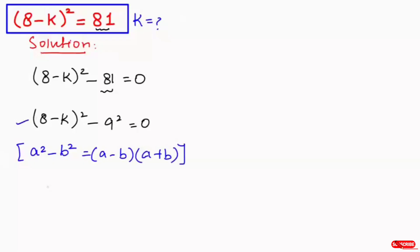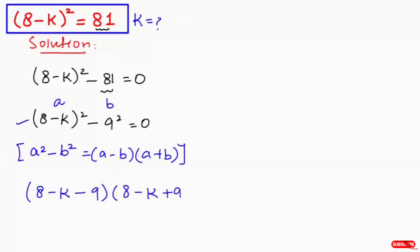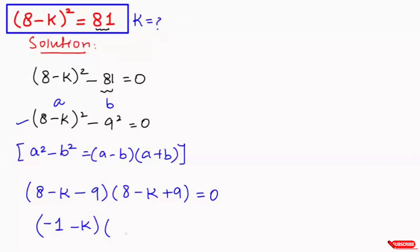So this can be written as — this is our a and this is our b value — (8 minus k minus 9) times (8 minus k plus 9) is equal to 0. This can be written as (minus 1 minus k) and (8 plus 9), which equals (17 minus k), is equal to 0.